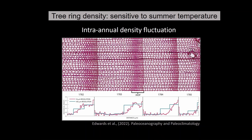In addition to ring width, the density of a tree ring is also an important proxy for past climate. It is typically observed that ring density is sensitive to summer temperatures. The later part of a ring — synthesized during summer, represented by darker patches — shows higher density. Measuring the maximum latewood density gives a time series that serves as a proxy for summer temperatures.